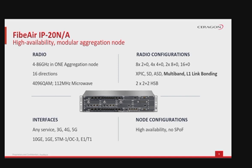IP20N features a high capacity design capable of operating with radios ranging from 4 to 86 GHz, supporting high modulations up to 4K QAM and 112 MHz channel bandwidth for traditional microwave, and IP20E or IP50E for E-band. It supports various radio configurations including multi-carrier, space diversity, X-PIC, and link bonding, and is capable of serving three, four, and five generation cellular networks in a compact one or two rack unit format with no single point of failure.